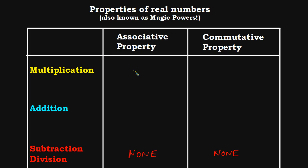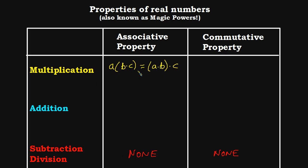There is an associative property for multiplication. In books it looks like this: if we have A times (B times C), that is exactly the same as (A times B) times C. Those two things are equivalent. The associative property means no matter how you group things that are multiplied together, you will get the same product.